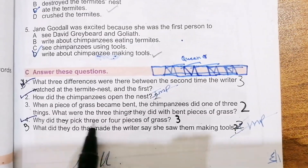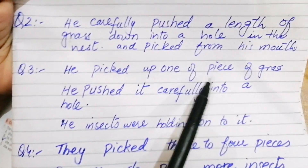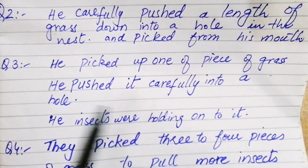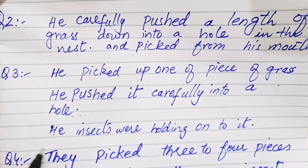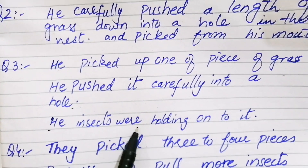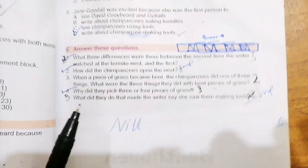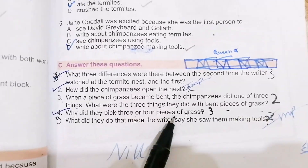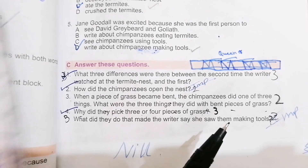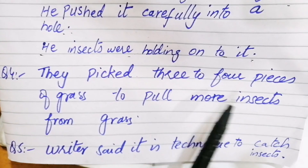Third question: when a piece of grass became bent, the chimpanzee did one of three things. What were those three things? First, he picked up a piece of grass. Second, he pushed it carefully into a hole. Third, the insects were holding on to it. So these are the three things he did.